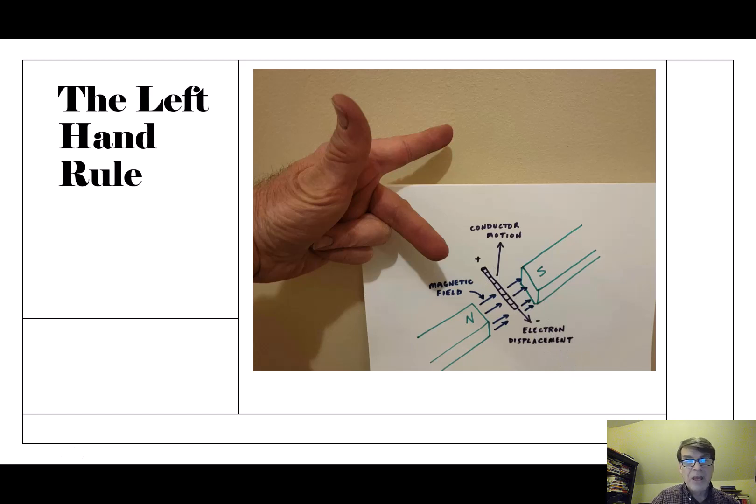Who knew? And so this left-hand rule, again, index finger in the direction of the magnetic field, thumb in the direction that the conductor is moving, and then the second finger is going to show you which direction the electrons are going to move. Isn't that neat? I think that's neat.